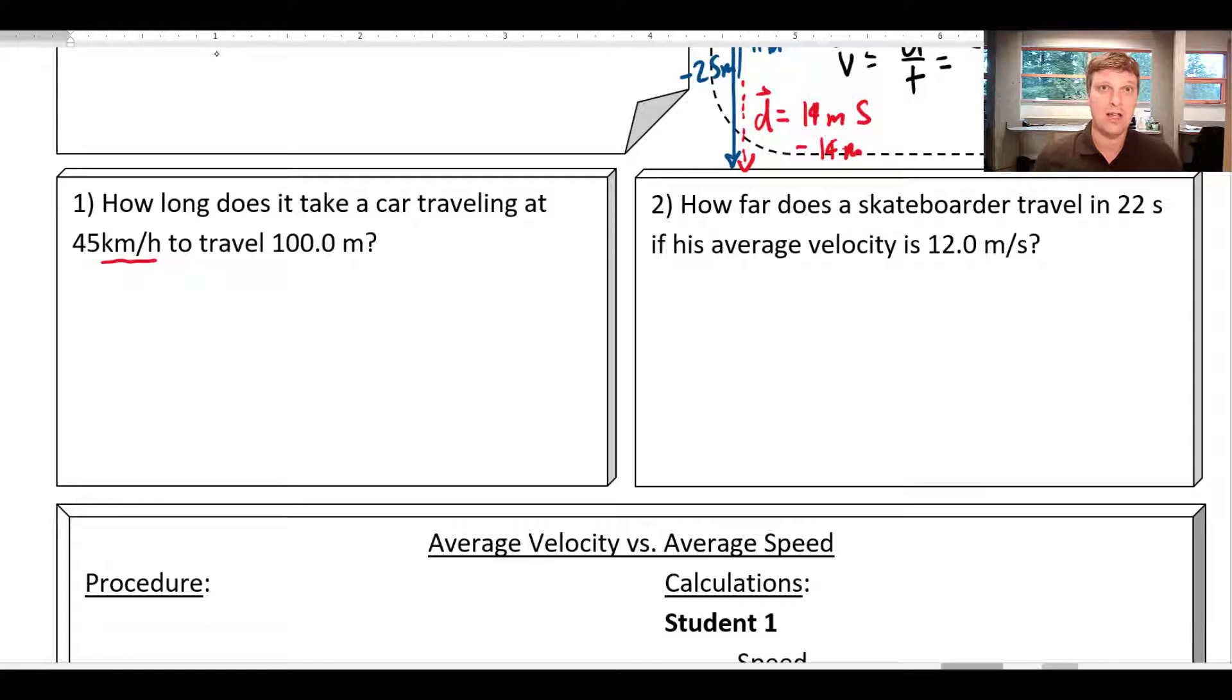We have to do our calculations in meters per second. Now, if you remember from a previous video, if I want to go from kilometers an hour into meters per second, there is a magic number that will help me do that conversion. That magic number is 3.6. So I'm going to divide by 3.6. And I'm going to find here that 45 divided by 3.6 gives me 12.5.